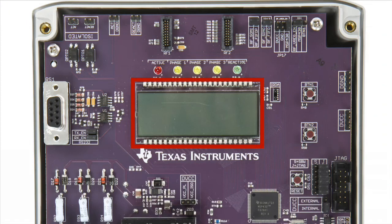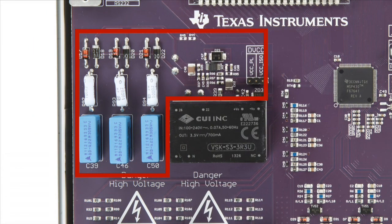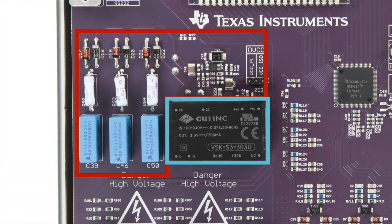The EVM includes a LCD and LEDs to indicate active-reactive energy consumption and other metrology parameters. It also has a flexible power supply option to support a low-cost capacitive or switch-mode power supply.